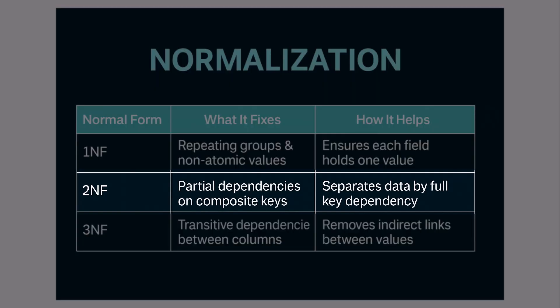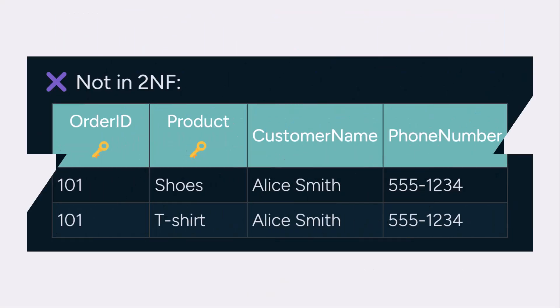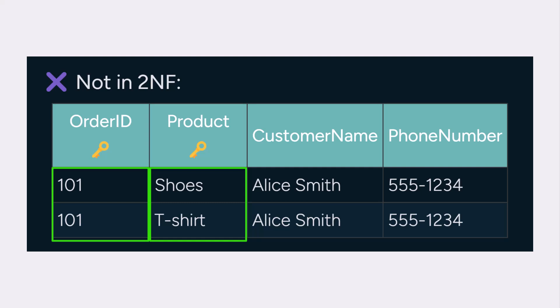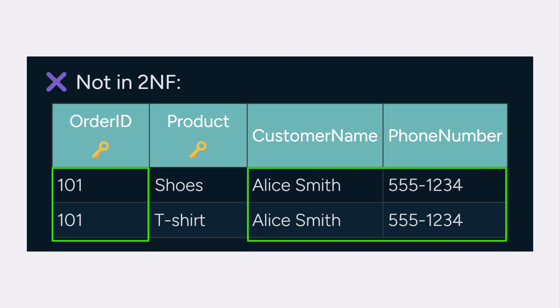Let's break down second normal form. The goal? Remove partial dependencies, which means every non-key column must depend on the entire primary key, not just part of it. For example, if your table uses a composite key like order ID plus product, but fields like customer name and phone number depend only on order ID, you have a problem. That causes repeated customer data, violating second normal form.